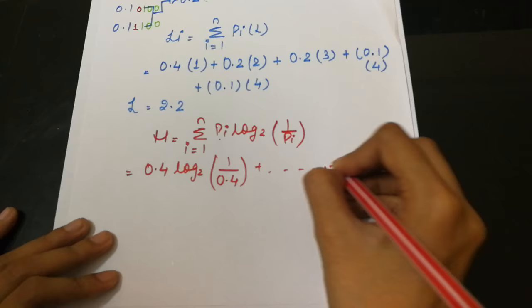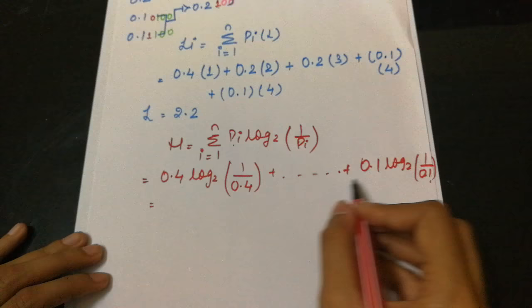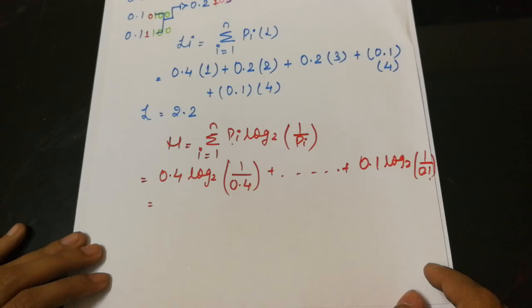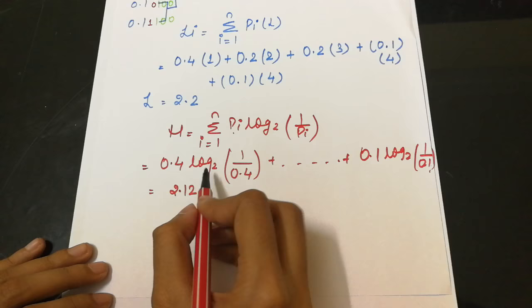Plus 0.1 log base 2, 1 upon 0.1. Now on this calculation, when you calculate this with your calculator, you get 2.121. It is very necessary to write log base 2 in your calculator.